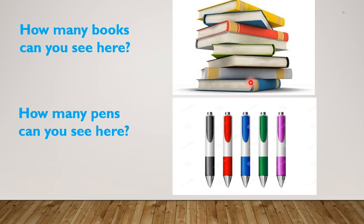So first we start from one book: 1, 2, 3, 4, 5, 6, 7, 8. I can see 8 books here.